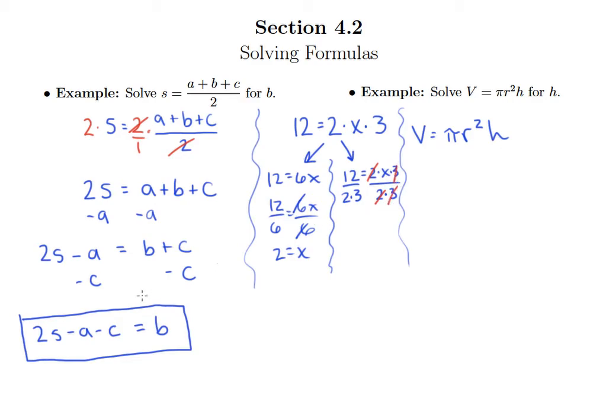I would still achieve my goal of getting x all by itself. But at the same time, 2 times 3 is still just 6. And so I get x equals 12 over 6, which means x equals 2. So either way, I get the same answer whether I bother to multiply 2 and 3 together first or not.